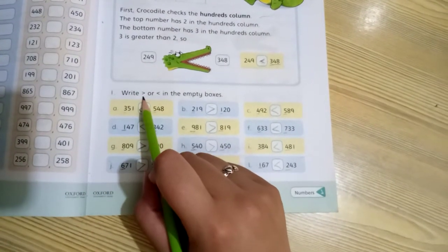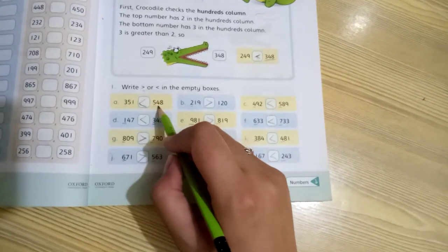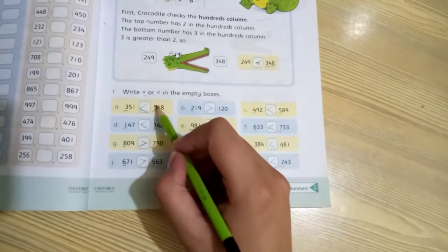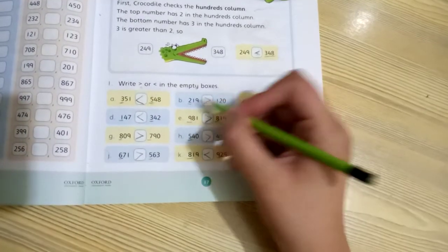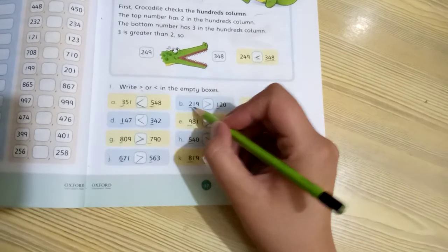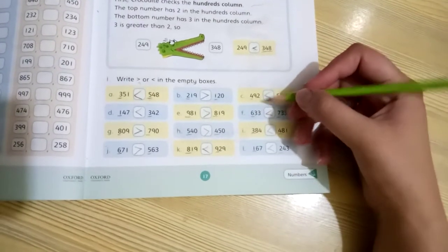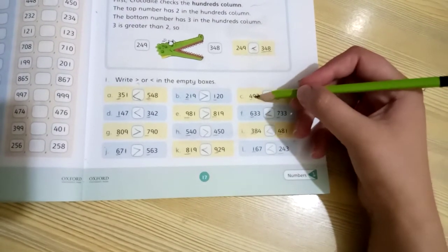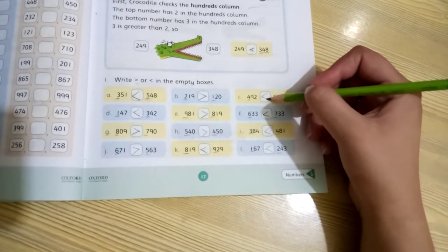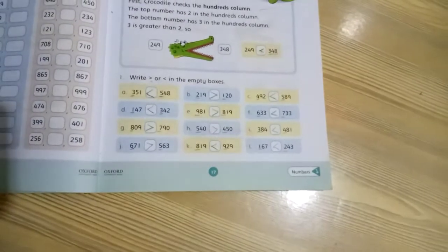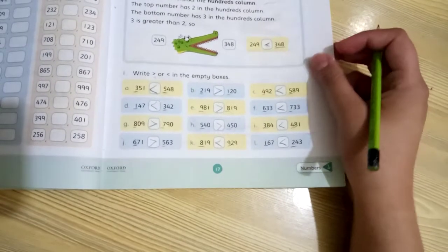Now write the numbers less than or greater than in the empty boxes. Part A: 351 and 548. Here is 3, here is 5, which is greater? This 5 is greater, so the hungry crocodile's mouth opens this way. Part B: 219, 120, so 2 is greater, the mouth opens this side. Third part: 492, 189. 4 and 5, compare them. 5 is greater, so the mouth opens this way. The remaining parts from D to L you will compare and solve yourself.